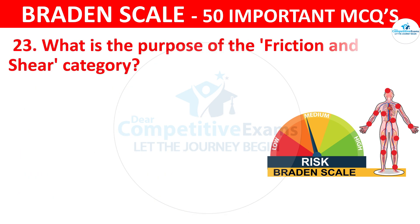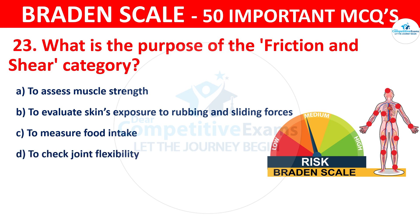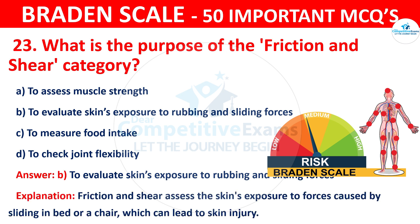Question number twenty-three: What is the purpose of the friction and shear category? The options are to assess muscle strength or to evaluate the skin's exposure to rubbing and sliding forces. The correct answer is B — to evaluate the skin's exposure to rubbing and sliding forces. Friction and shear assesses the skin's exposure to forces caused by sliding in bed or a chair, which can lead to skin injury.